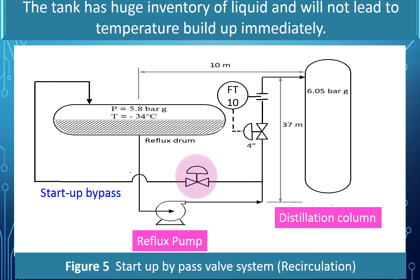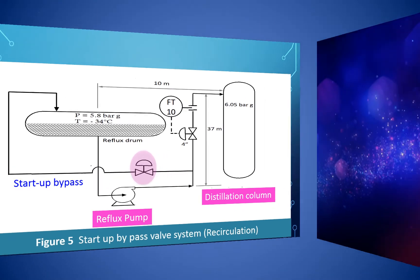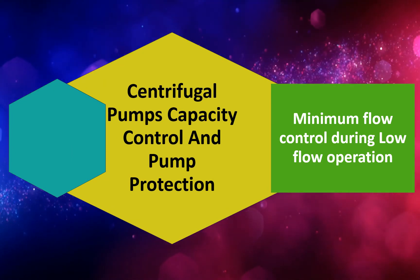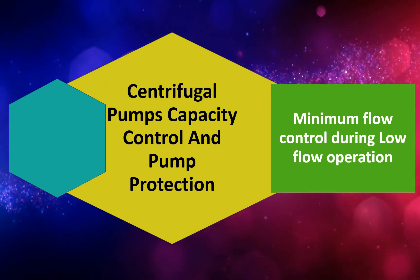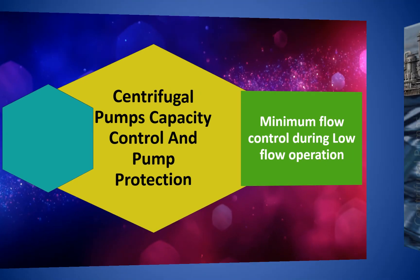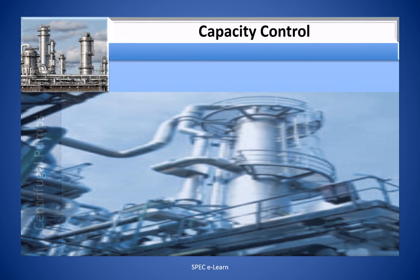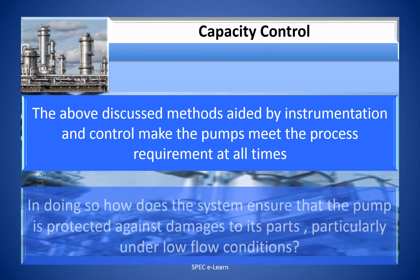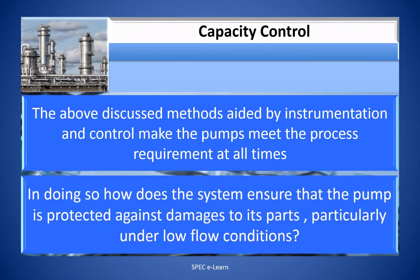The reason for routing bypass flow to the tank is to prevent the buildup of heat during recycling if routed back to the pump suction line. The tank has a large inventory of liquid and will not lead to temperature buildup immediately. Centrifugal pump capacity control and pump protection — minimum flow control during low flow operation. The discussed methods, aided by instrumentation and control, make pumps meet process requirements at all times. The system must also ensure the pump is protected against damage, particularly under low flow conditions.